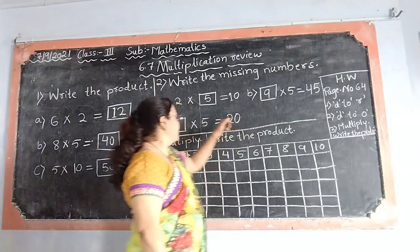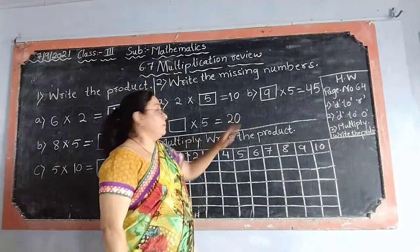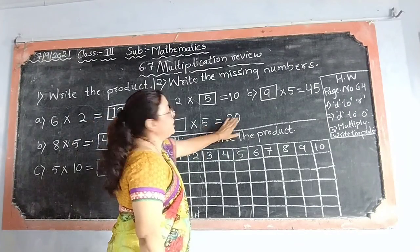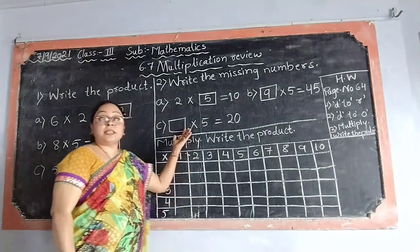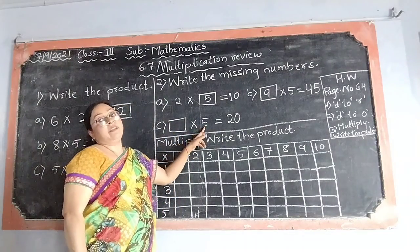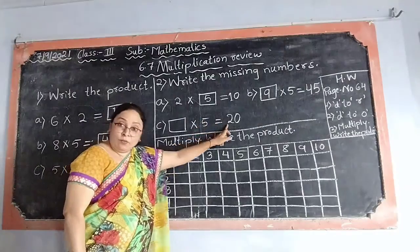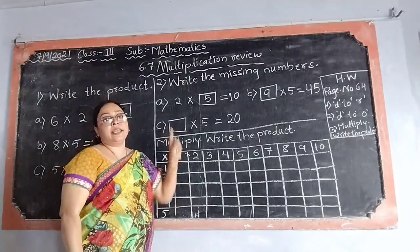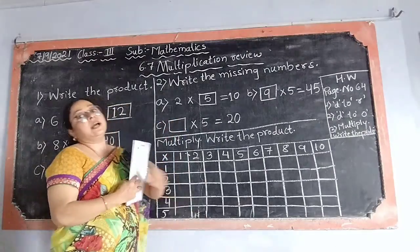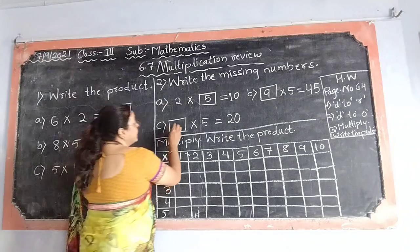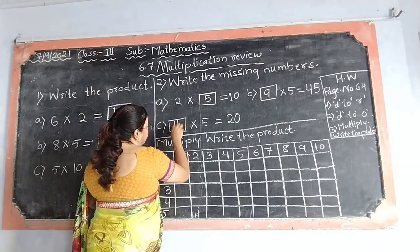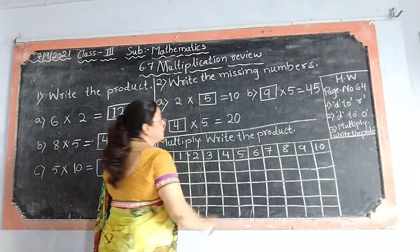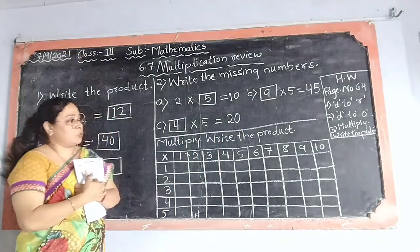Try to do the answer. Now here: dash multiplied by 5 equals 20. Which is the missing number? Again we have to read 5's table till 20 comes. 5 1's are 5, 5 2's are 10, 5 3's are 15, 5 4's are 20. So what is the missing number? Missing number is 4. 4 multiplied by 5 equals 20. What is the product? 20. I hope you understood, children.